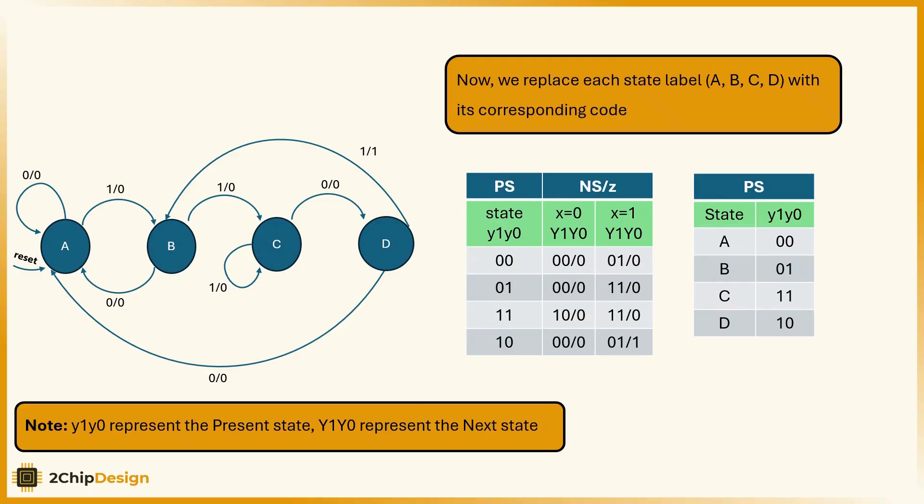Now, we replace each state label A, B, C, D with its corresponding code. Note, y1 y0 represent the present state. Y1 Y0 capital represent the next state.